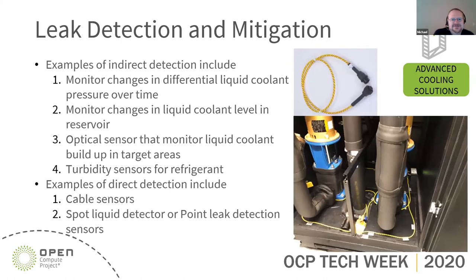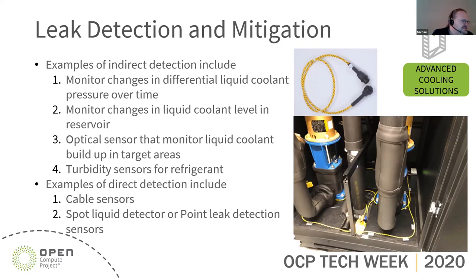There are two forms of detection: indirect and direct. Indirect detection examples include monitoring system pressure — looking at pressure drop for fluid supplied to a whole rack. Also, if there's a reservoir in the CDU or manifold, tracking the fluid level to see if it drops is a definite sign of a leak. Optical sensors or turbidity sensors can detect bubbles in the flow — a sign of air or gas leaking into your system.